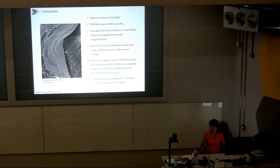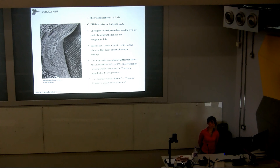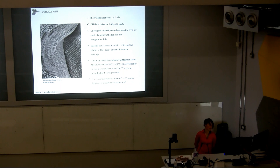The study has many conclusions; here are the most important. We produced a discrete sequence of six Unitary Association zones, with the Permian-Triassic boundary falling between UA2 and UA3. We observe uncoupled diversity trends across the Permian-Triassic boundary for the two families, ancygnathodontids and neogondolelids. Nevertheless, we can still identify the Permian-Triassic boundary in cases of complete ecological exclusion. The main extinction event identified at Meishan spans the interval from UA2 to UA4, corresponding to the hiatus at the base of the Triassic in microbialite-bearing sections. We should rather speak of a Permian-Triassic boundary mass extinction, as the extinction interval spans the Permian-Triassic boundary. Thank you for your attention.